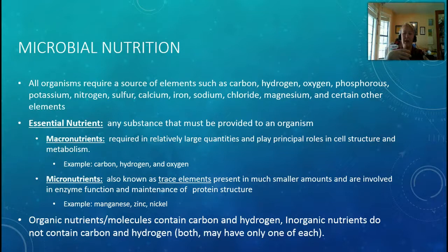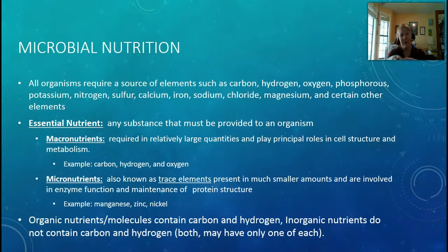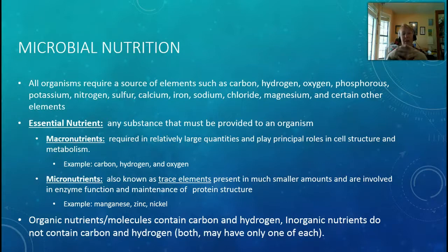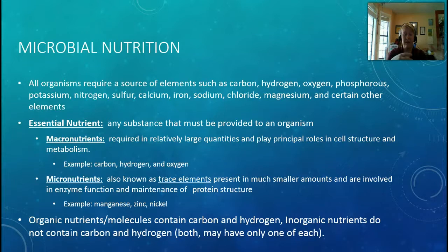Some examples of micronutrients are manganese, zinc, nickel — things you sometimes get from vitamins or leafy green vegetables. One important term to clarify: when we talk about something being 'organic' in science, we're not talking about pesticides. We're talking about a molecule that contains carbon and hydrogen. If it has carbon and hydrogen, it is considered an organic molecule. If it doesn't have both, it is considered inorganic.